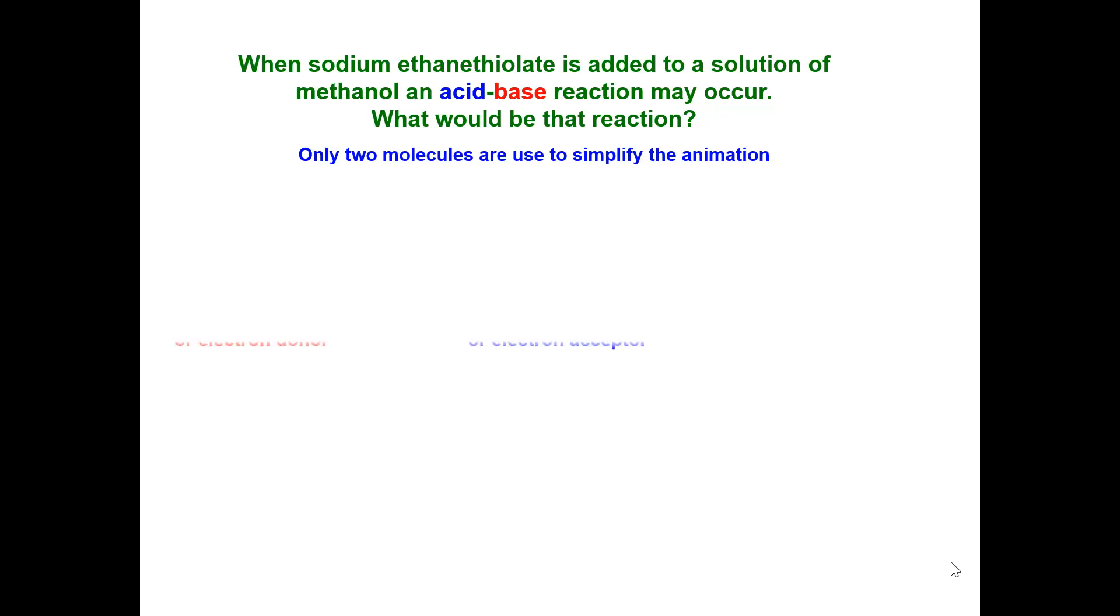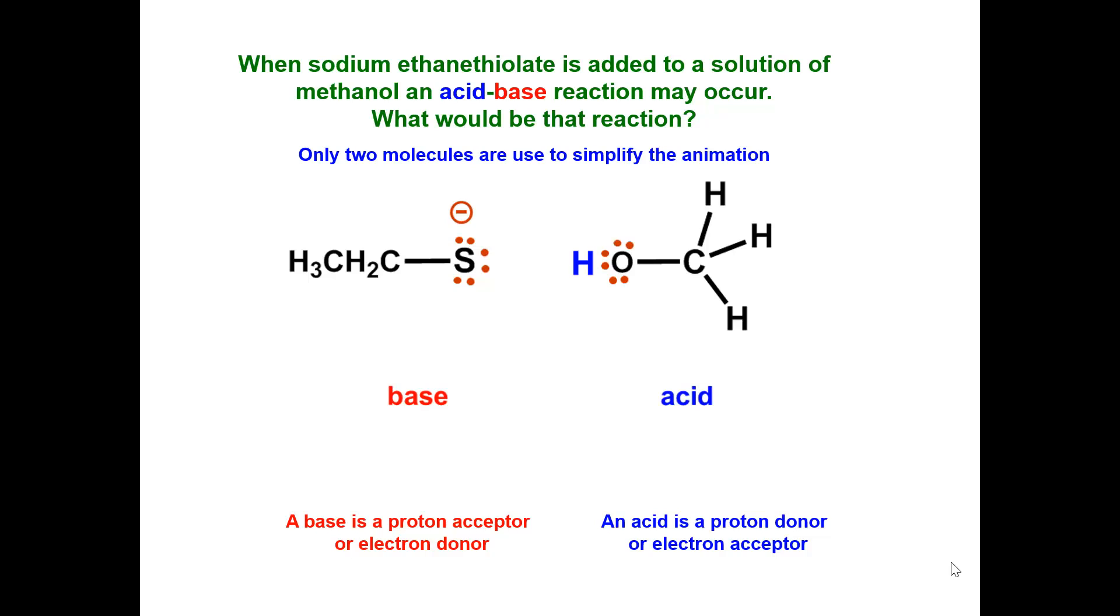A base is a proton acceptor or electron donor. An acid is a proton donor or electron acceptor. The thylate ion is the base and will accept a hydrogen or donate its electrons to a hydrogen. Methanol is the acid and will donate its hydrogen or accept electrons from the base.